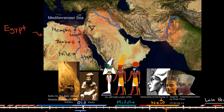Settlement may have been there even further back in time. Because of that agriculture, it allowed for higher population densities, which allowed for more specialization of labor and more complex societies — it's not a coincidence that one of the first great civilizations emerged here.